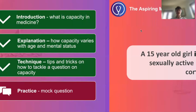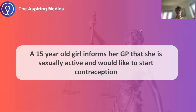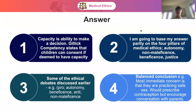Now we're going to look at a mock question. A 15 year old girl informs her GP that she is sexually active and would like to start contraception. Firstly, define capacity — the ability to make a decision and weigh up the benefits and risks to come to an informed decision. Gillick Competency states that children can consent if they're deemed to have capacity. You could go into more detail on Gillick Competency or the definition of capacity. The Mental Capacity Act of 2005 may be less directly relevant here, but it's always useful to know.